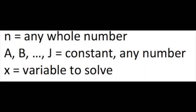n can be any whole number while a, b, and j are called constants in math, which means they are just numbers. x is the variable in the equation that we want to solve for.